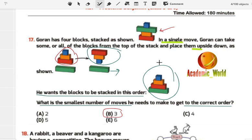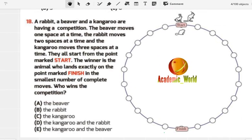The next question, number 18: A rabbit, a beaver, and a kangaroo are having a competition. The beaver moves one space at a time, the rabbit moves two spaces at a time, and the kangaroo moves three spaces at a time. They all start from a point marked START. The winner is the animal who lands exactly on the point marked FINISH in the smallest number of complete moves. Who wins the competition?